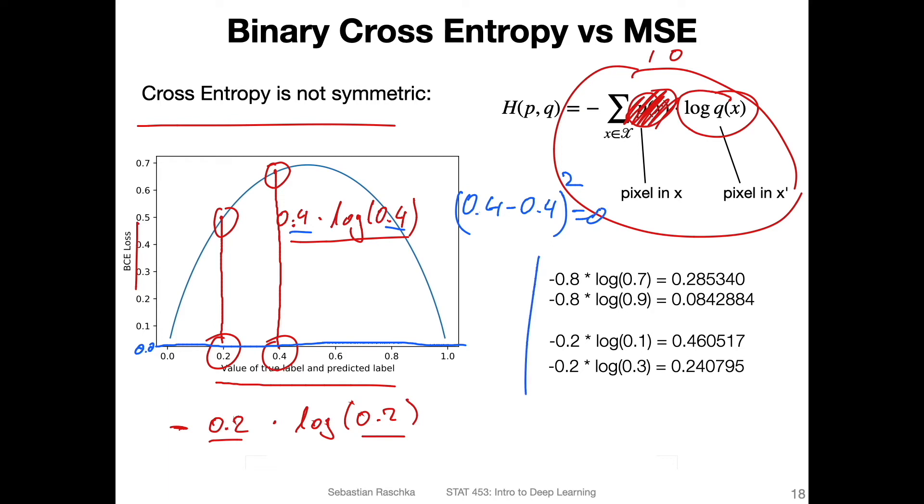Well, here's another example. Consider we have the true pixel value point eight and the reconstructed pixel value is point seven. So we are off by point one. We would get a loss of point two eight. If I have point nine here for reconstruction, still I'm off by only point one. Now I get a point oh eight, right? So for some reason it penalizes this point seven more than this point nine. Because it's not symmetric. Same as if I have a minus point two here as a true pixel and I predict a point one here, point three, we'll find these are different values.